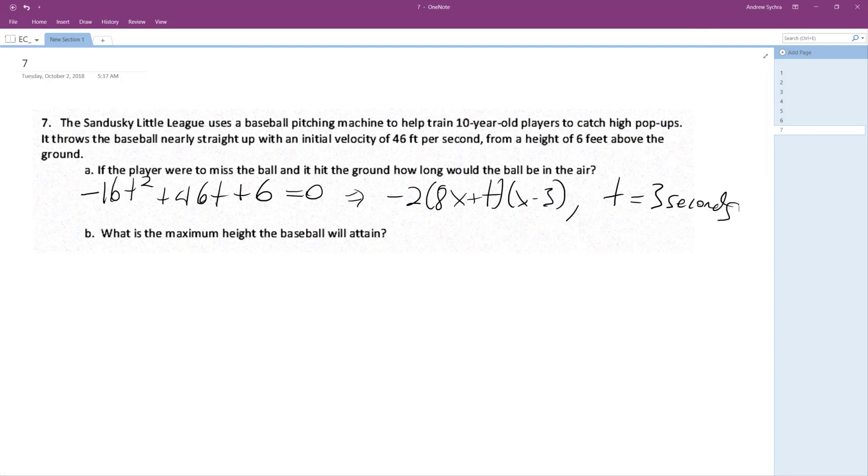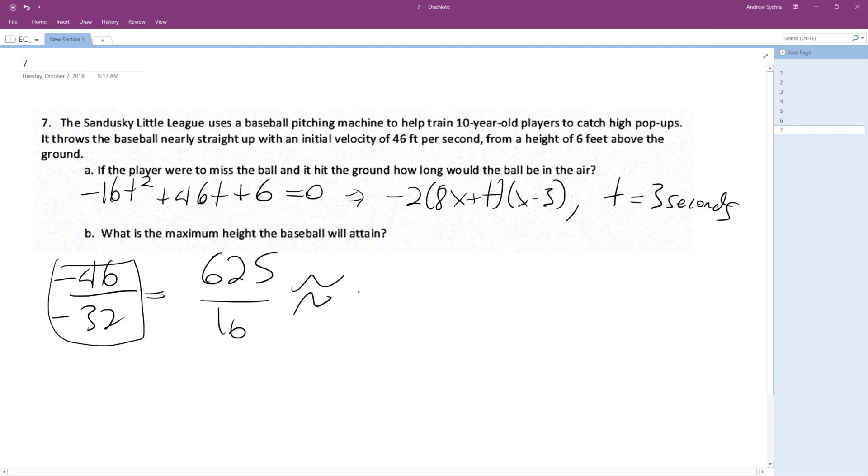What's the maximum height? It's going to be opposite B, so negative 46 over negative 2 times negative 16, so 32, which is going to be equal to 23 over 16. So we plug this in, and then we get 625 over 16, which is equal to 39.1 feet.